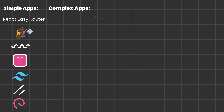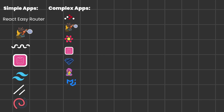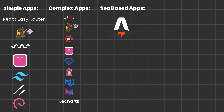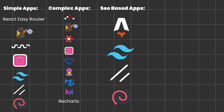For more complex enterprise scenarios: React Router, Zustand, TanStack Query, React Hook Form, Zod, Emotion, Material UI, Material UI Icons, Framer Motion, Recharts, and Material UI Data Grid. For simple performance-focused content-based apps: Astro, Tailwind, Shadcn, and Lucid Icons.